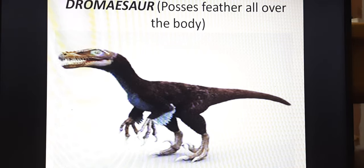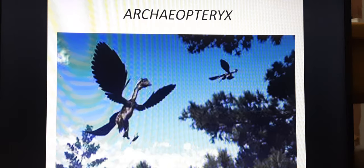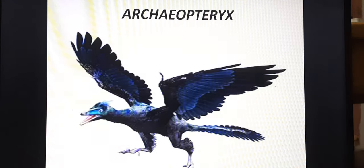Dromaeosaurus possesses feathers all over the body. Since it possesses feathers all over the body, this is a characteristic of birds. Archaeopteryx is another example — it has started flying and it has the characters of both birds and reptiles.